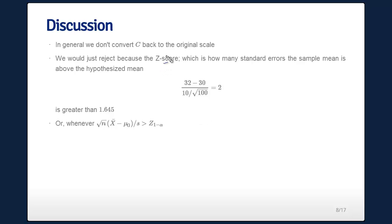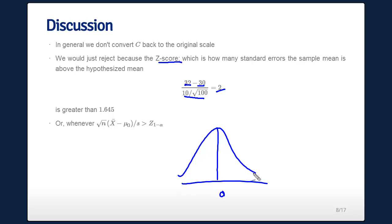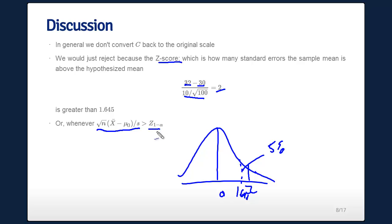In general, we don't convert c back to the original scale; we work on the standardized scale. Our z-statistic is how many standard errors the sample mean is above the hypothesized mean. Our observed mean was 32, our hypothesized mean was 30, and our standard error is 1, giving a z-score of 2. We compare that to 1.645 — the quantile with 5% above it — and since 2 is larger, we reject. The general rule is to reject whenever square root n times (x-bar minus mu-naught) over s is bigger than the appropriate normal quantile.